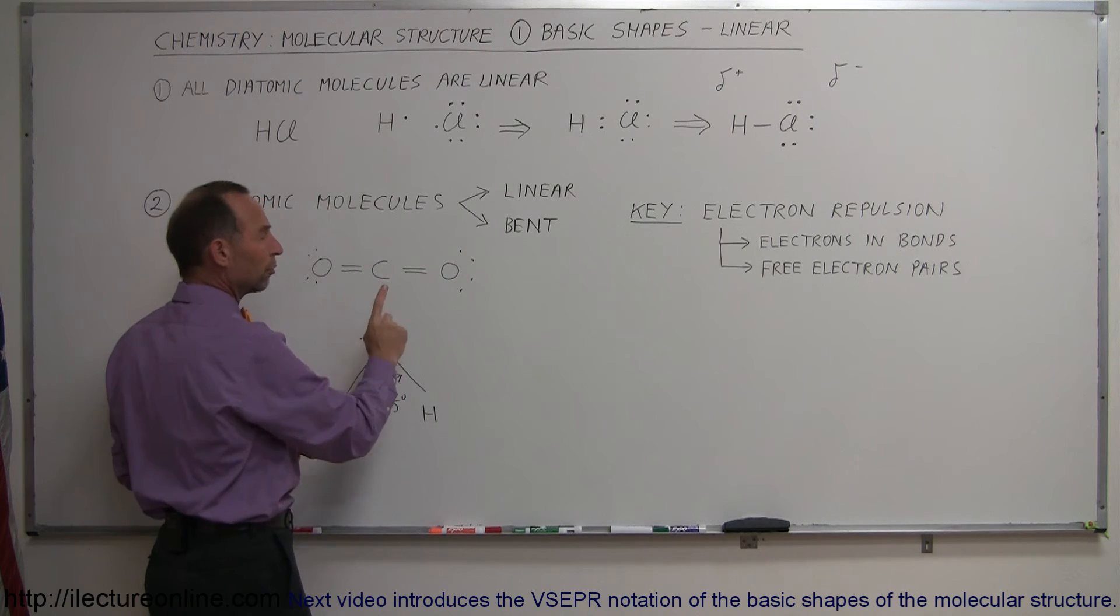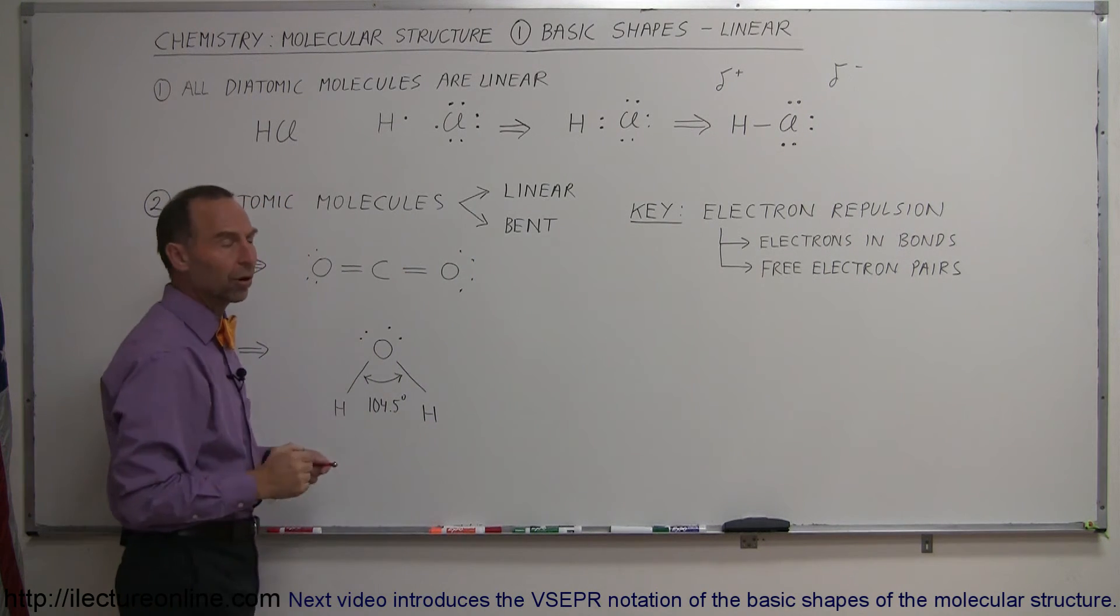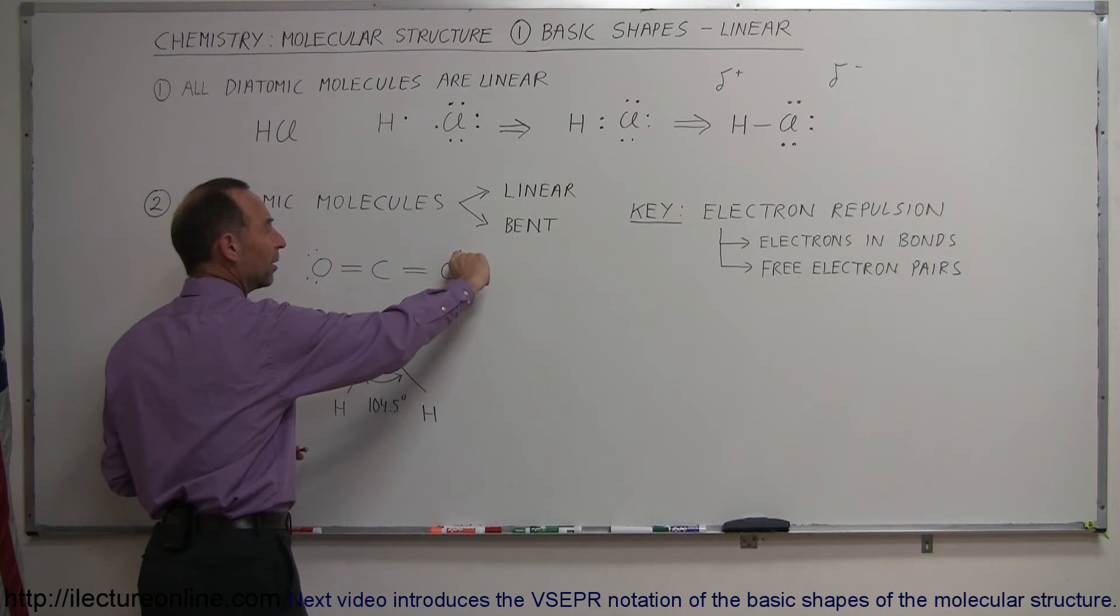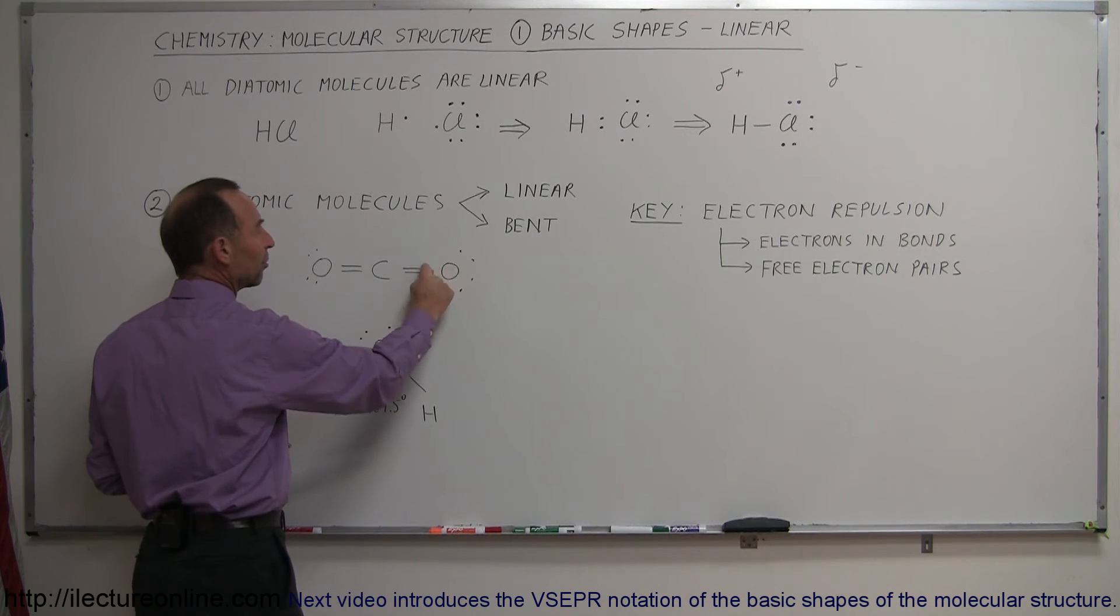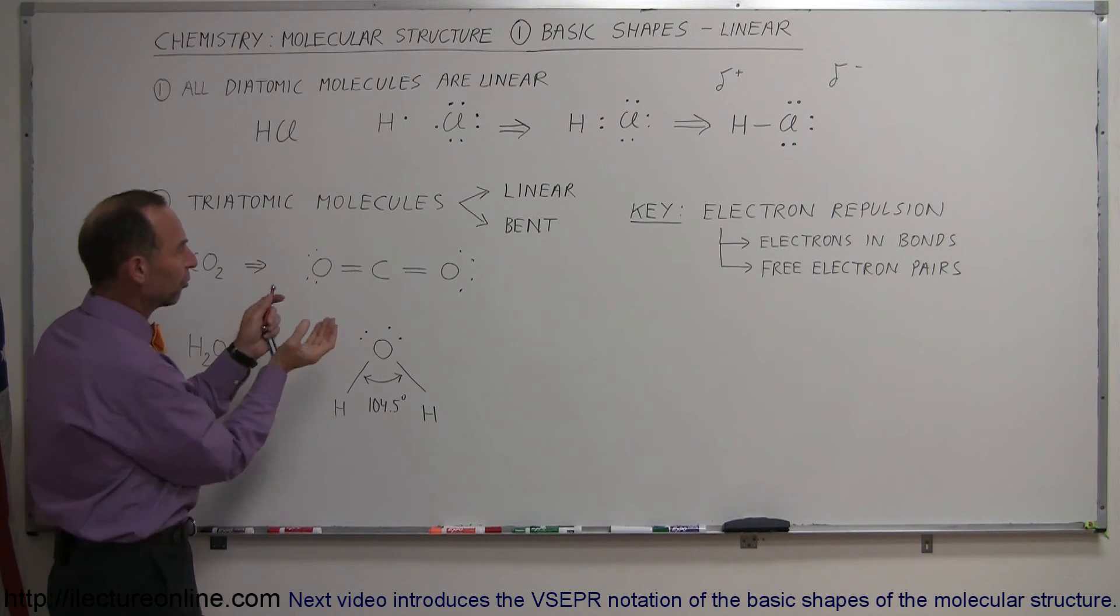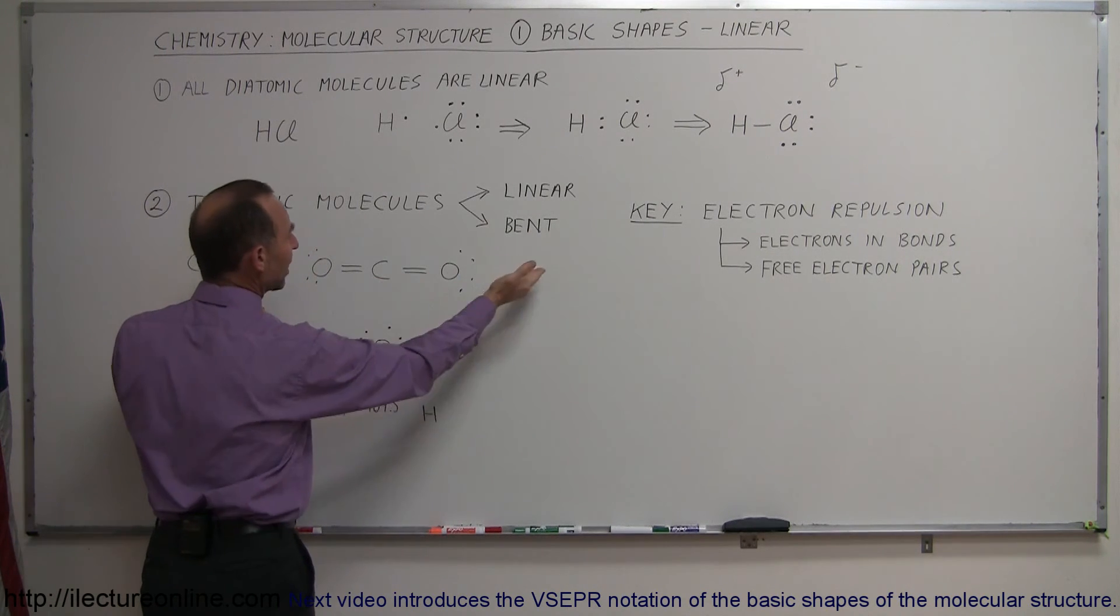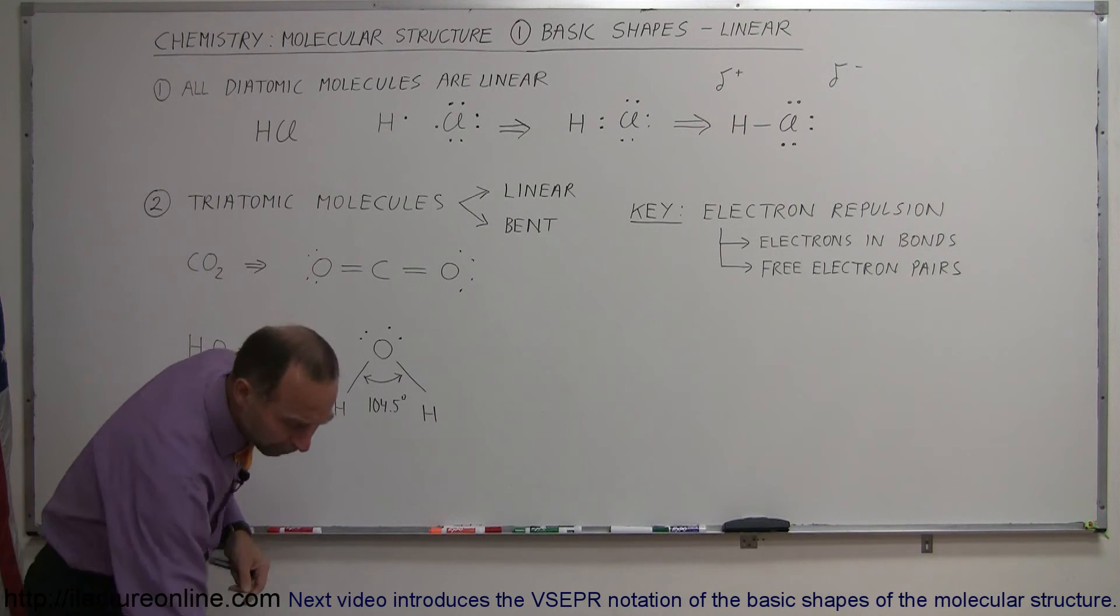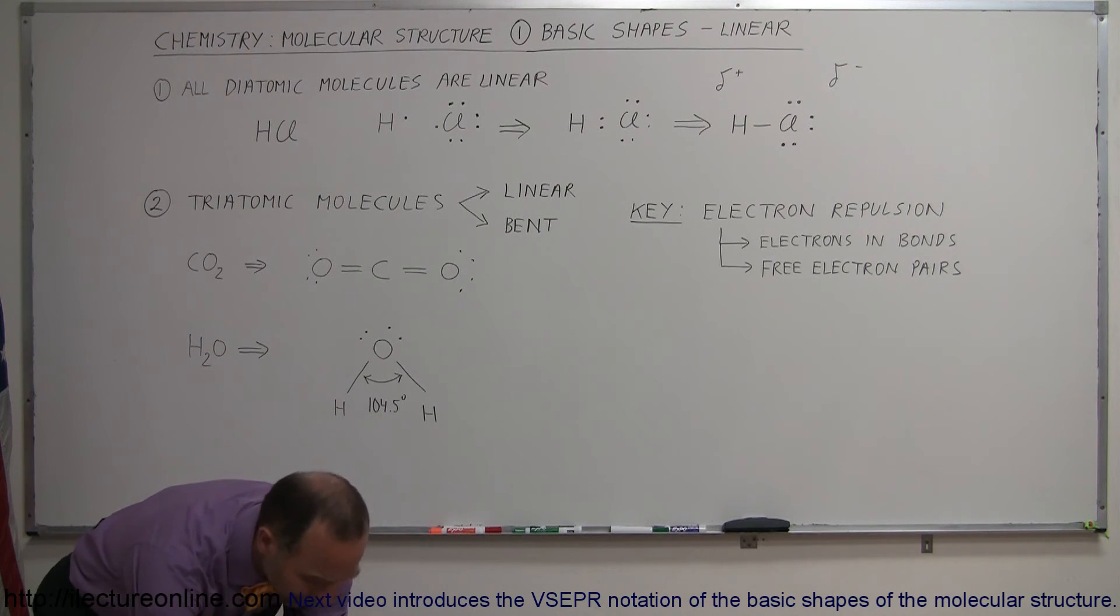It does turn out that the repulsive forces between free electrons is a little bit bigger than the repulsive forces between free electrons and bonded electrons. So the separation of these will be slightly larger than the separation between these two right there. But because of that, the balance of the forces forces the oxygen to be straight out like this.